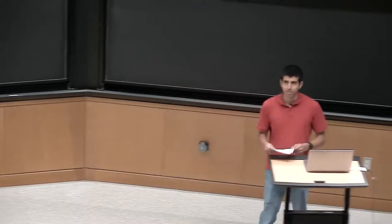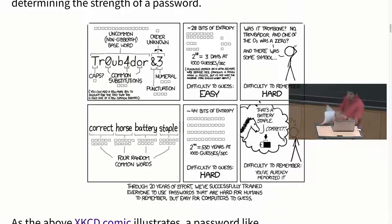The first topic is entropy — a measure of randomness, useful for determining the strength of a password. There's a well-known XKCD comic about this. It complains about the common pattern taught to users where passwords should be things like 'Tr0ub4dor&3' — full of funny characters to make it hard for attackers to guess. It turns out those passwords are actually pretty weak and guessable by computers using brute-force attacks.